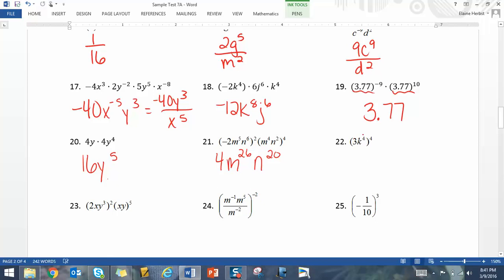22. We're going to take 3 to the fourth power. 3 to the fourth power is 81. Then we multiply the exponents. So it's 81k to the sixteenth.